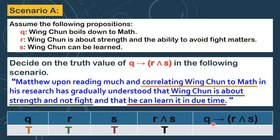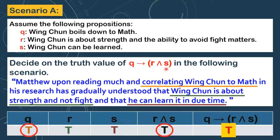So the truth value of R and S is T. Finally, we can get the truth value of this statement: if Q, then R and S. We focus on two truth values — the truth value of Q, which is your hypothesis, and the truth value of R and S, which is your conclusion. If your hypothesis is true and your conclusion is true, this conditional statement is also true. So this is the final answer — the truth value of if Q, then R and S is true.